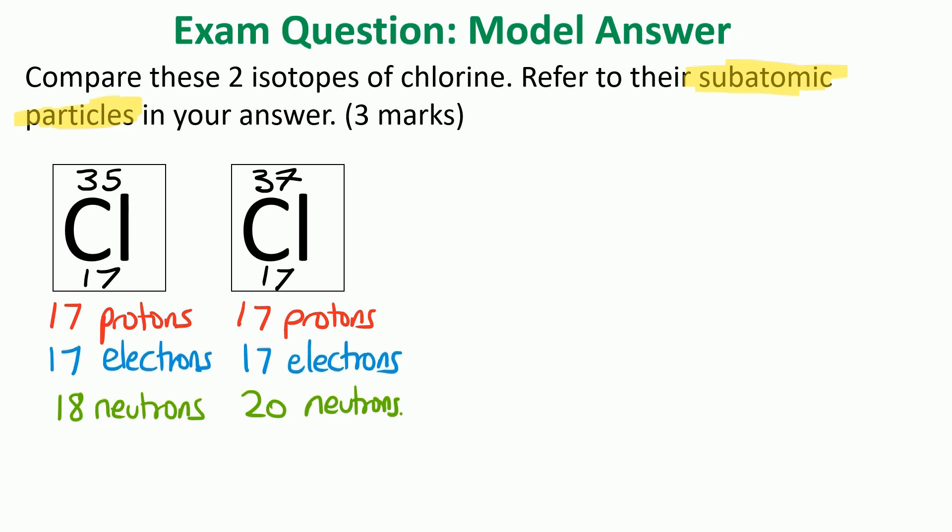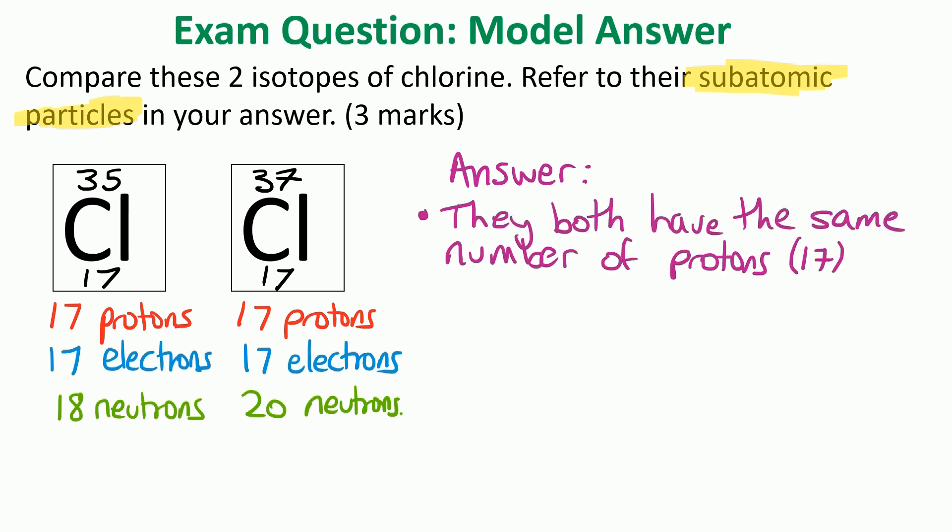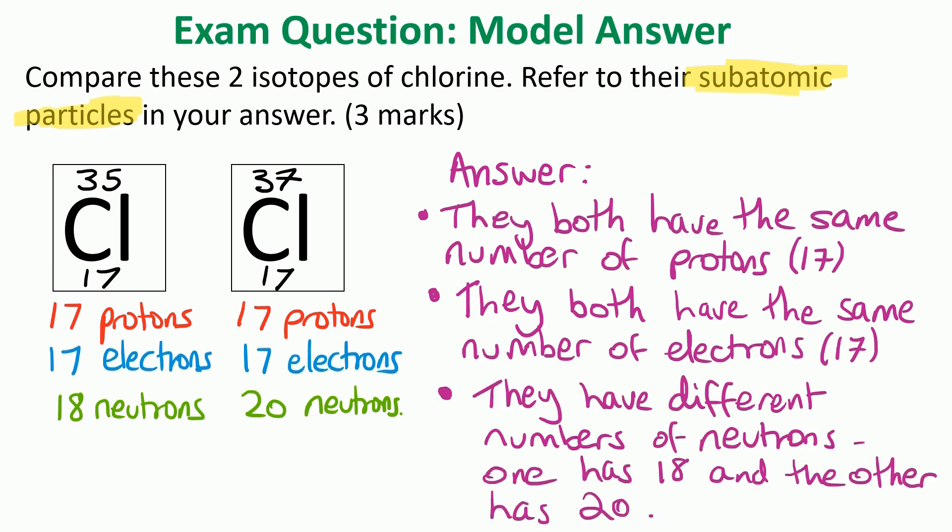In your answer you would then write about each of the three types of particle to get the three marks. The first mark would be for saying they both have the same number of protons, which is 17 - actually say how many they've got. Second mark for saying they both have the same number of electrons, which is also 17. However, they have different numbers of neutrons - one type of chlorine has 18 neutrons and the other has 20. So you can see for the three marks we've spoken about protons, electrons, and neutrons.